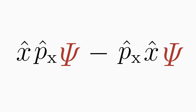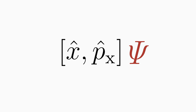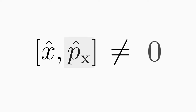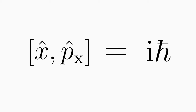The difference of the two measurements is provided by a commutator. We form the difference of the two measurements, bracket out the wave function, and the difference of the operators is the commutator of x and px. If the commutator is zero, it is in principle possible to know both observables exactly at the same time. If the commutator is not zero, it is impossible to know both observables exactly — only one can be determined exactly. In the case of the position and momentum operator, the commutator is equal to ih-bar.